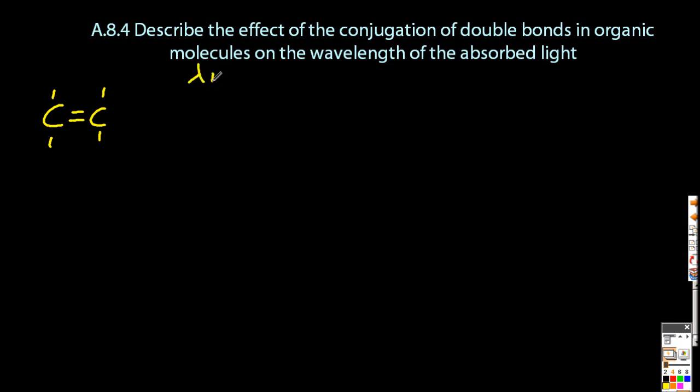So ethene just has one double bond, and the radiation that it absorbs, the so-called maximum wavelength of the radiation it absorbs, is about 300 nanometers. So that's in the UV. If ethene absorbs UV, then it's going to appear colorless to me. I can't tell it's absorbed UV, I can't see that.